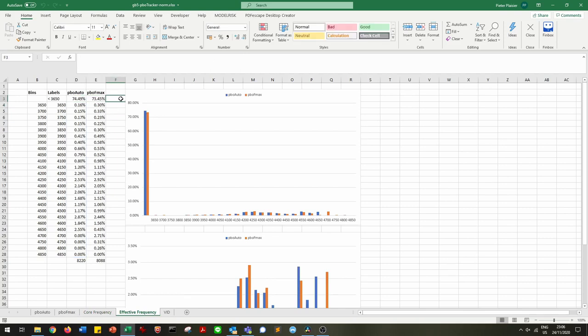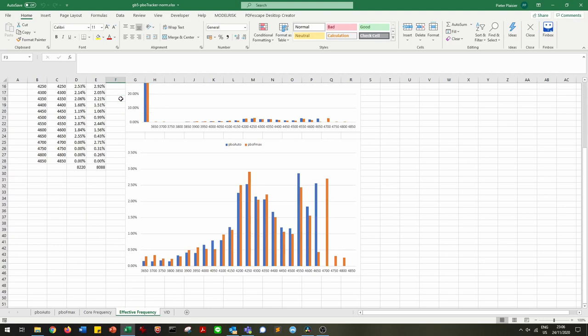If we zoom in on the boost frequency range, we can see that the actual time spent at an effective clock of 4.65 GHz or above is 2.55% for automatic Precision Boost Overdrive and 3.71% with that Fmax offset. So slim margins.